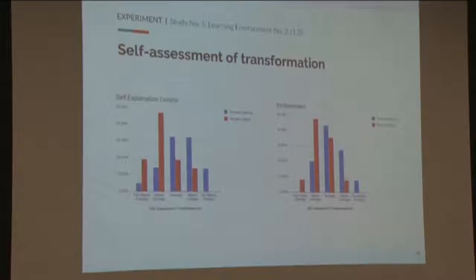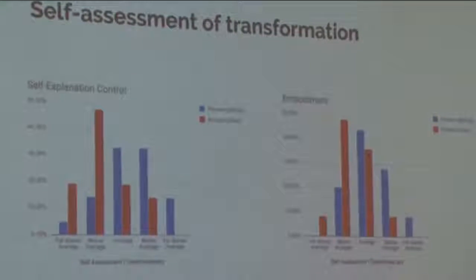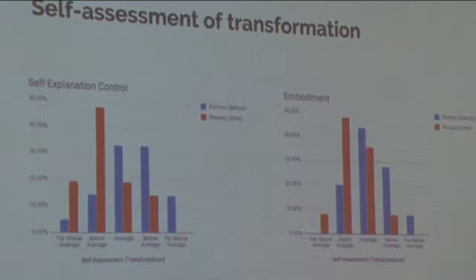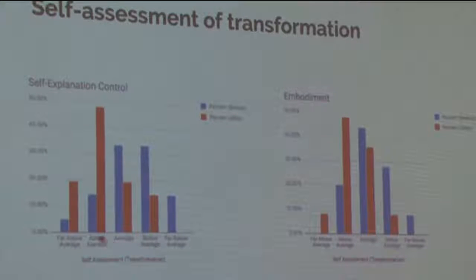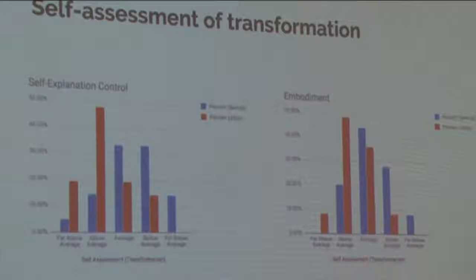For symmetry, both timed and untimed versions show remarkably flat results with no real change between pretest and posttest. Interestingly, when I asked students on the survey to self-assess their understanding of transformation both before and after the intervention, what I see is that in both the self-explanation control and the embodiment condition, students are shifting from considering themselves average to above average on the concept — suggesting they perceive themselves as having learned something even when the test scores don't show it.